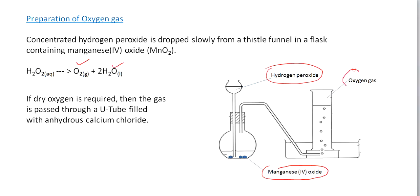The oxygen gas is collected here, giving us a moist sample. If dry oxygen is required, the gas is passed through a U-tube filled with anhydrous calcium chloride.